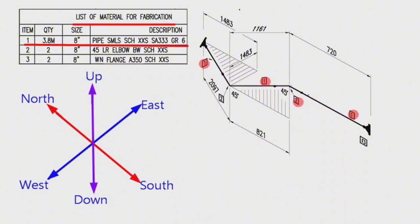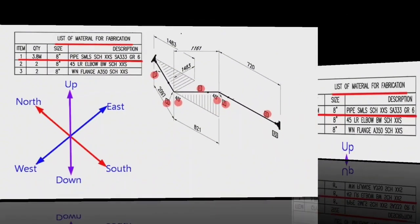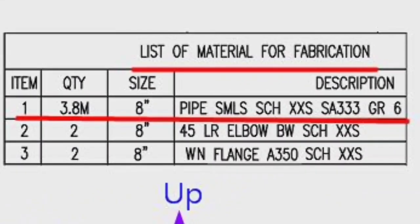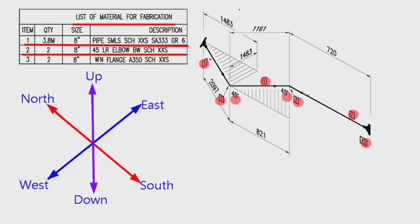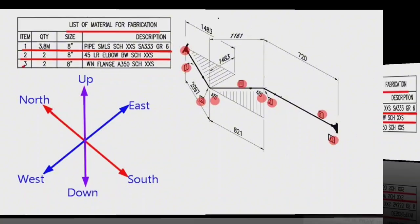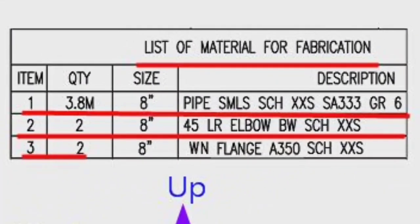Detail number 2 was used in two places in the pipe drawing: quantity is 2 pieces, size is 8 inches, 45 degree long radius elbow, schedule is XXS. Detail number 3 was used in two places also: quantity is 2 pieces, size is 8 inches, weld neck flange, A350, schedule is XXS.